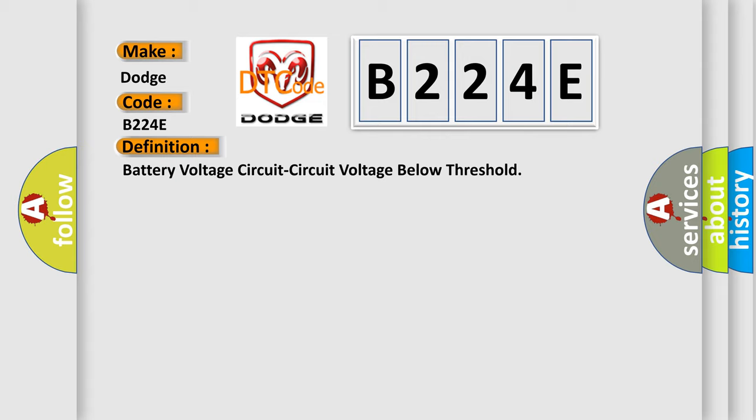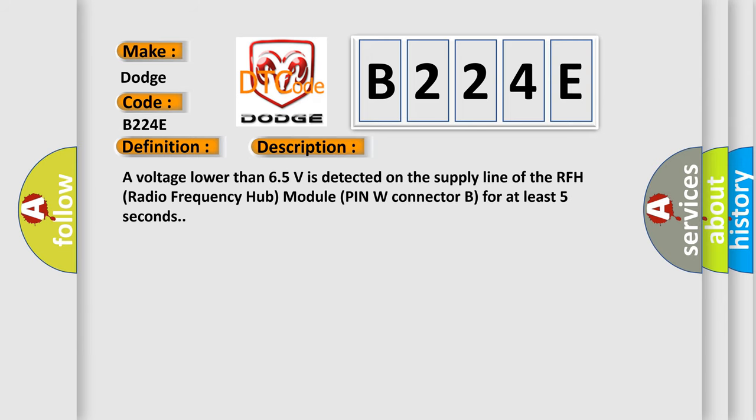And now this is a short description of this DTC code. A voltage lower than 6.5 volts is detected on the supply line of the RFH radio frequency hub module pin W connector B for at least five seconds.